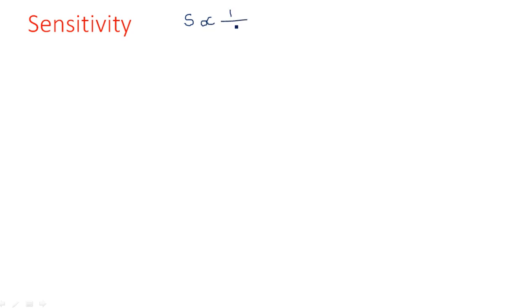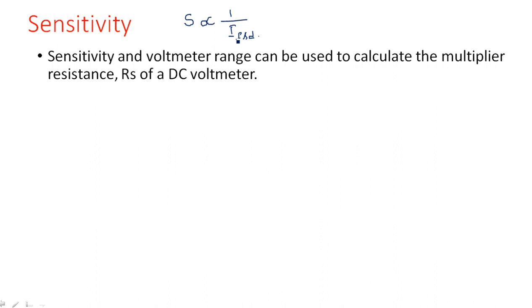Coming to sensitivity. Sensitivity of a voltmeter is defined as proportional to one divided by the full scale deflection current. Sensitivity S = 1/IFSD — it is the reciprocal of the full scale deflection current. Sensitivity can also be used to calculate the multiplier resistance RS of a DC voltmeter using the formula: RS = S × range − RM.